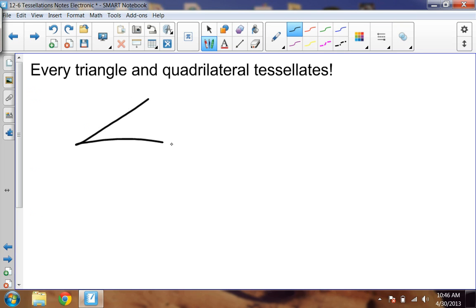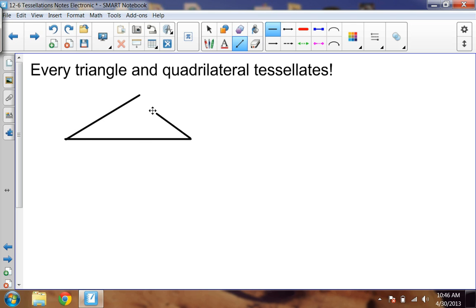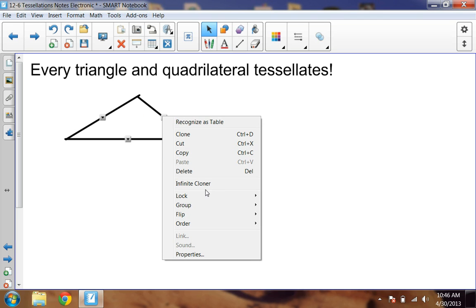Okay, every triangle and quadrilateral happens to tessellate, even the most scalene of triangles. If I use this triangle right here, that's not isosceles. It's not right. It's not equilateral. It's just scalene. I use that, and I go ahead and group all these points right here.